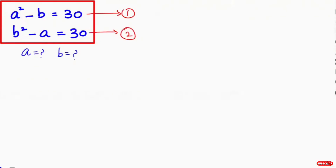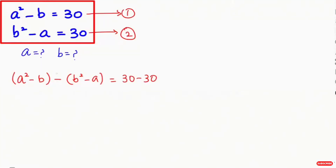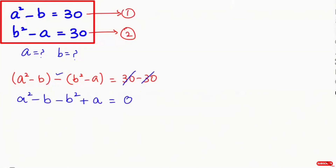Now I'm going to subtract equation 1 and equation 2: a squared minus b, minus bracket b squared minus a, equals 30 minus 30. I'm going to apply the negative sign into the bracket, so we get a squared minus b minus b squared plus a equals 0.